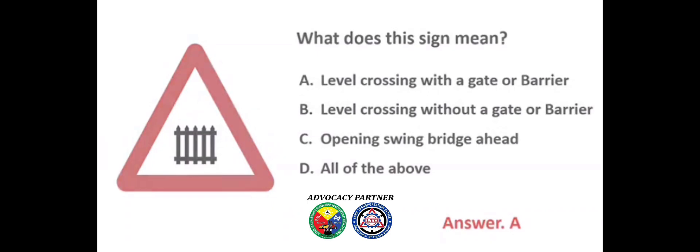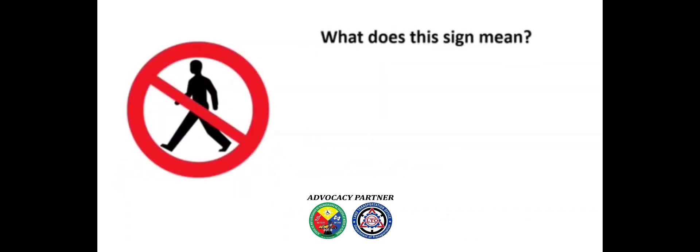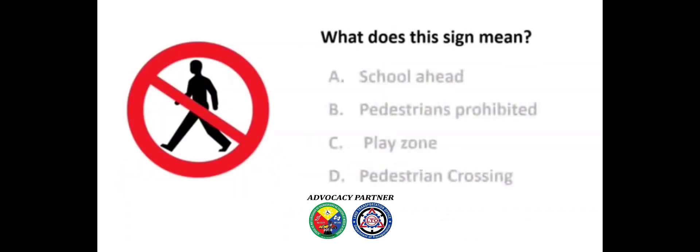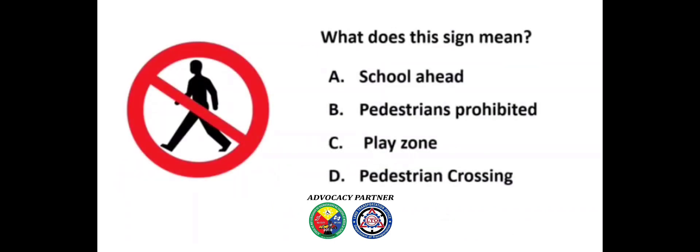What does this sign mean? A) School ahead, B) Pedestrians prohibited, C) Play zone, D) Pedestrian crossing. Answer: B) Pedestrians prohibited.